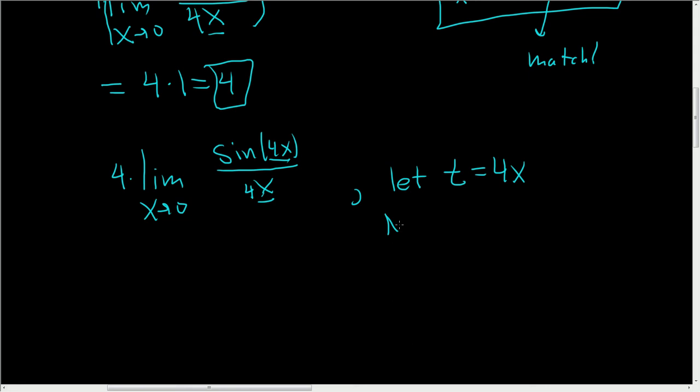You note, as x approaches 0, t also approaches 0, because it's 4 times x. So if x is approaching 0, then t is also approaching 0.